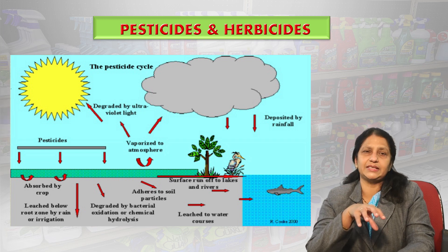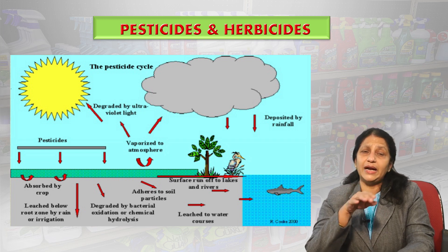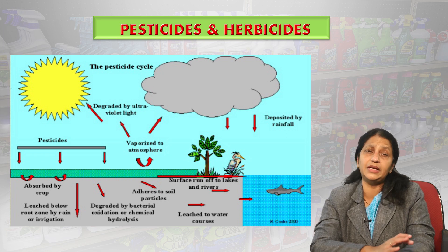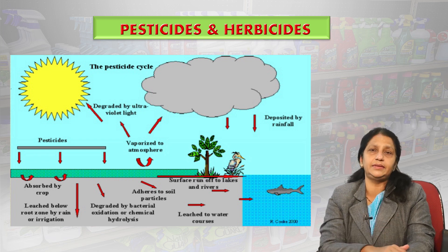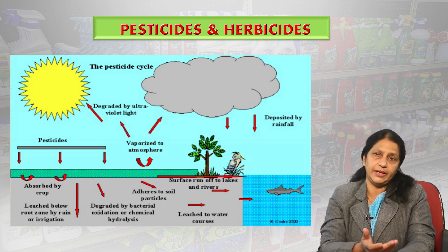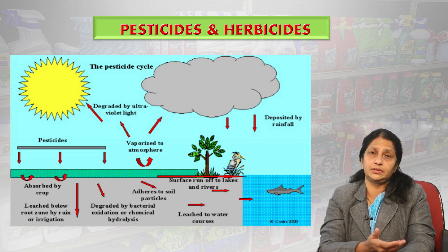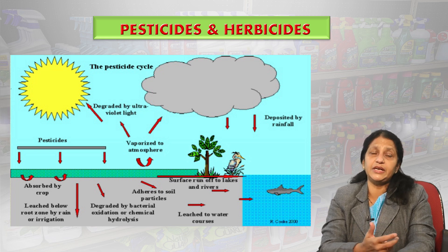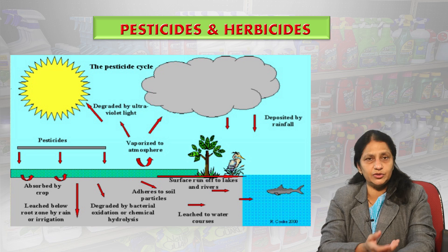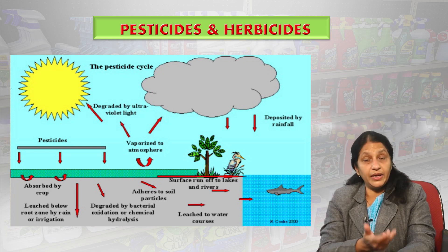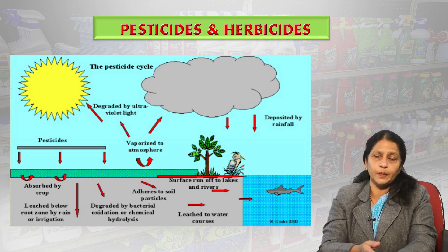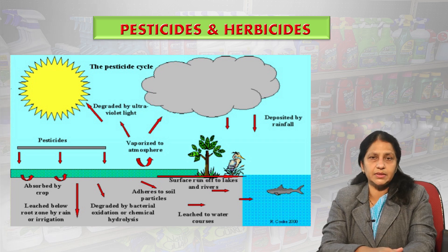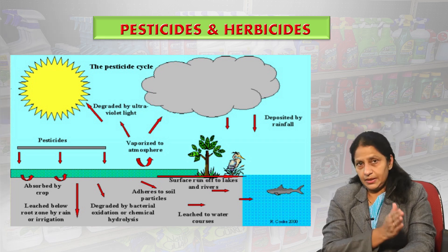People who mix, load and apply pesticides outdoors are usually aware of how easily pesticides may drift from the application site to other areas. They may travel as sprayed droplets moved by wind, or as vapors entering the atmosphere, or attached to dust particles or solid blowing soil particles. That is the movement in air.